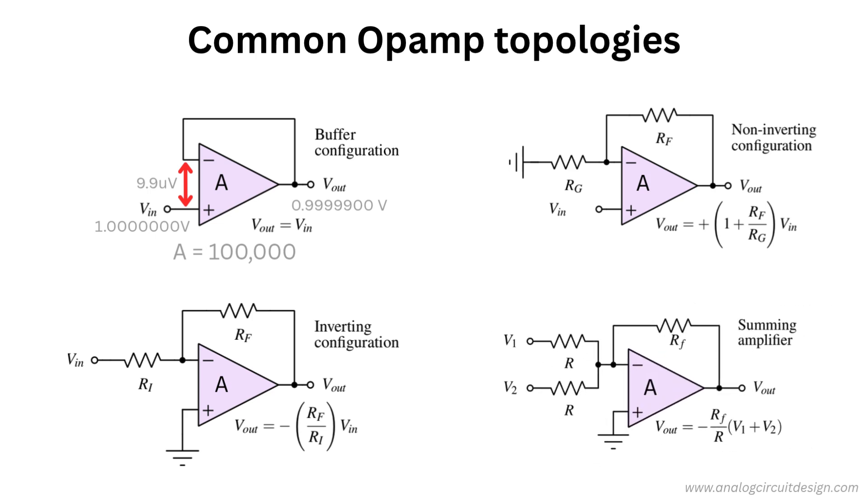Some examples of negative feedback circuits are shown below. Op-amps can be configured as buffer or voltage followers, inverting and non-inverting amplifiers, summing circuits, and more. As you can see in the top left, if A is 100,000, the difference between the two inputs is 9.9 microvolts, which is very small. The negative feedback establishes a virtual short between the two inputs.